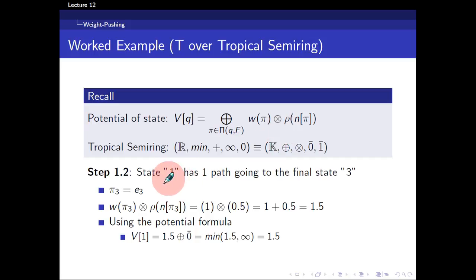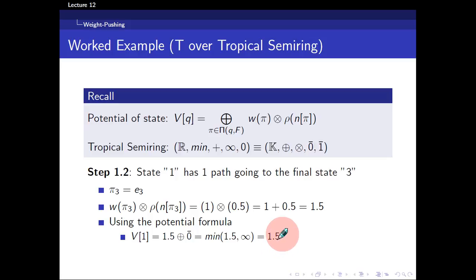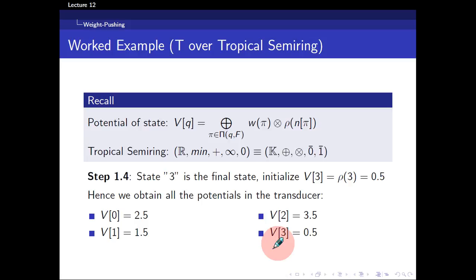Moving on, let's finish calculating the potential for the remaining states. State 1 has just one path via E3, so we multiply and get 1.5, and 1.5 plus 0 gives 1.5. So the potential for state 1 is 1.5. For state 2, it's just E4 from state 2 to state 3, and the weight of that path is 3.5, so the potential of state 2 is 3.5. For the final state 3, we initialize it to its own weight, which is 0.5. So all potentials are: V0 = 2.5, V1 = 1.5, V2 = 3.5, V3 = 0.5.